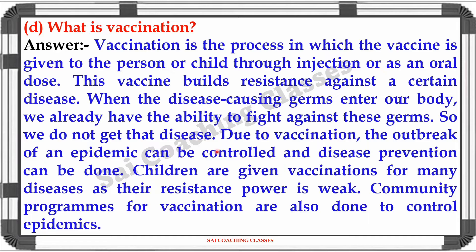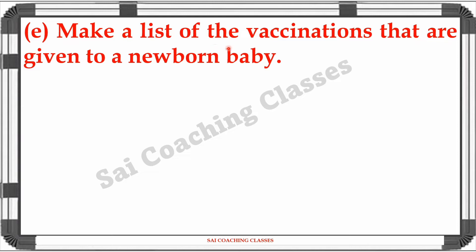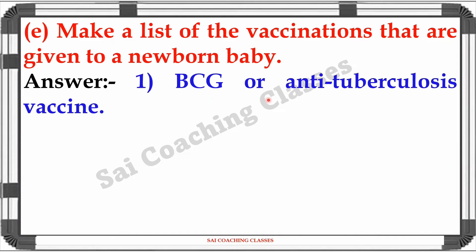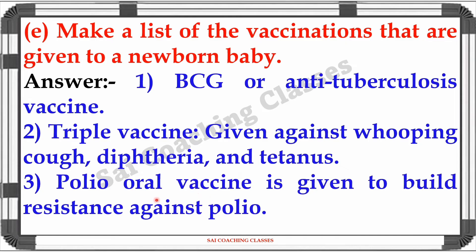The outbreak of an epidemic can be controlled and disease prevention can be achieved. Children are given vaccination for many diseases as their resistance power is weak. Community programs for vaccination are also done to control epidemics. Question E: Make a list of the vaccinations given to a newborn baby. Answer: BCG or anti-tuberculosis vaccine. Triple vaccine given against whooping cough, diphtheria, and tetanus. Polio oral vaccine is given to build resistance against polio.